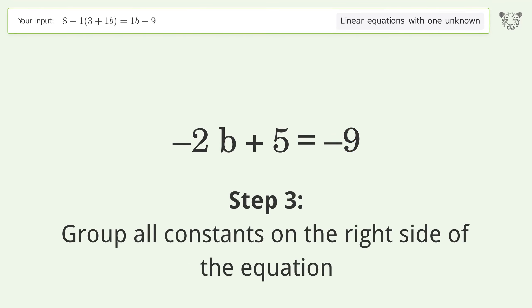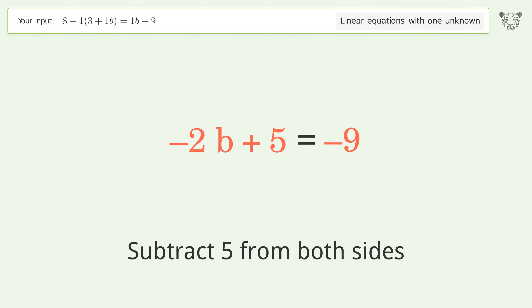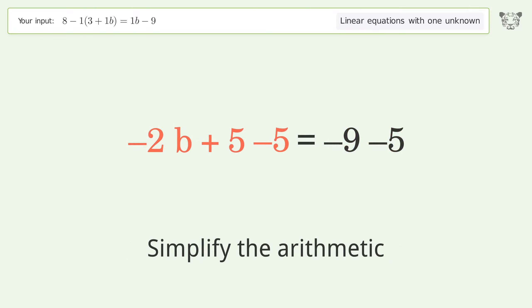Group all constants on the right side of the equation. Subtract 5 from both sides, then simplify the arithmetic.